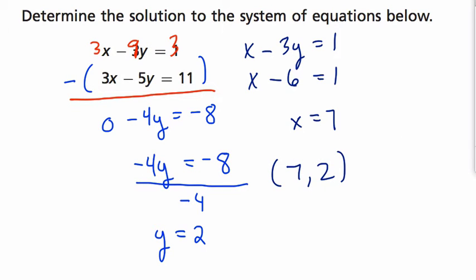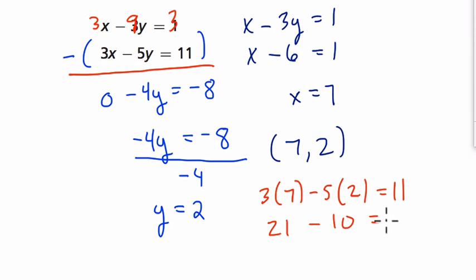Let's plug it into the second equation just to check it. So if y is 2 and x is 7, 3 times x, 7, minus 5 times y, 2, needs to equal 11. Let's make sure it does. 21 minus 10 equals 11. It does. Great. It works for both.